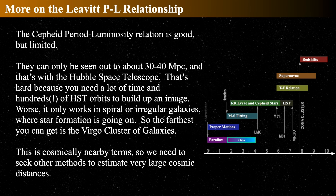Cepheid relationships only really work for spiral and irregular galaxies because that's where star formation is going on—you've got to have young, hot stars to make Cepheids. The farthest you can really get with Cepheids, identifying individual ones, is about the Virgo cluster of galaxies at about 65 million light years away. At 65 million light years, that's very nearby in terms of the universe. All of the galaxies in those interacting images are within 100 million light years, and the things in the background were much, much, much further.